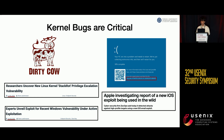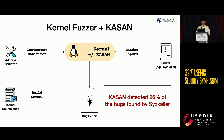We understand the importance of finding and fixing bugs that occur in the kernel. Unlike bugs in user programs, a kernel bug can cause the entire system to panic. Moreover, kernel vulnerabilities are being exploited and used for distributing malicious code. To effectively find these bugs, kernel fuzzers like SyzkallerI are widely used with the kernel address sanitizer, KASAN. According to Syzbot, KASAN detected 26% of bugs discovered by Syzkaller, which shows how effective KASAN is at detecting kernel bugs. KASAN is an essential tool for kernel fuzzing nowadays.